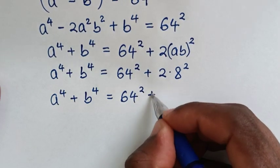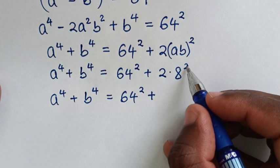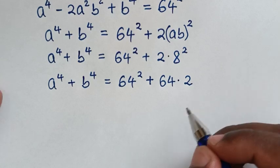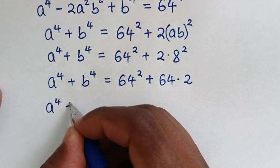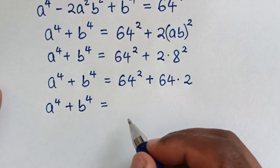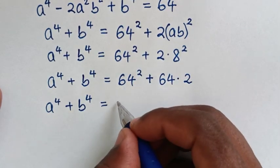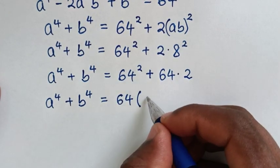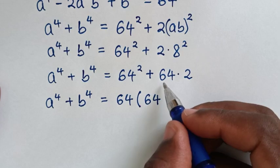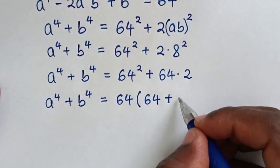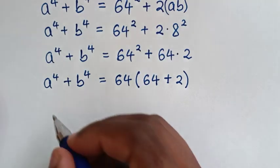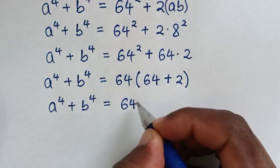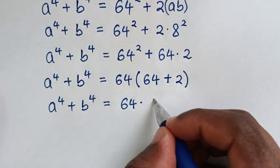Computing: 64 squared minus 2 times 8 squared. Taking 64 as a common factor out of the bracket: 64 squared divided by 64 is 64, and 2 times 64 divided by 64 is 2. So a to the power 4 plus b to the power 4 equals 64 times 66. We call this equation 3.